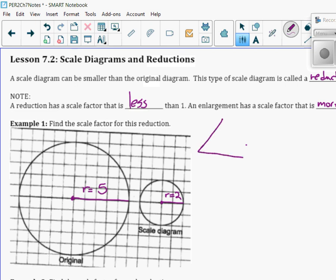Remember my triangle here, scale factor is enlargement or reduction over the original. So you can see my scale factor is going to be my reduction is 2 divided by 5, which gives me 0.4, or you can leave it as 2 fifths. The scale factor is less than 1.